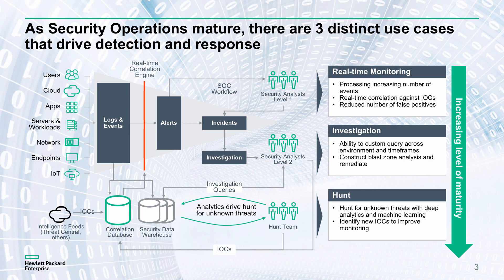We need to generate alerts that we can then investigate. We also need the capability of looking back at that data to understand what's happened over time. So we need to do real-time monitoring — get the data in, understand what it means, carry out correlation. Map that with indicators of compromise, or IOCs, which could be threat intelligence or information from security systems and devices. We then need to understand what that means and how it maps together to allow us to, in real time, generate alerts.